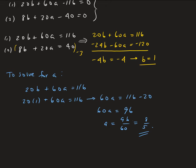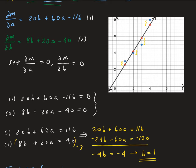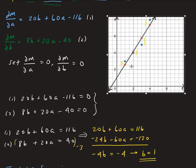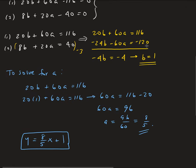So we have both B and A now. Our solution — the equation that we're looking for — is Y equals eight fifths X plus 1. This gives us the best fit line through our data. The red points on the graph are the ones we found based on this equation. This line gives us the minimum errors for the deviation.